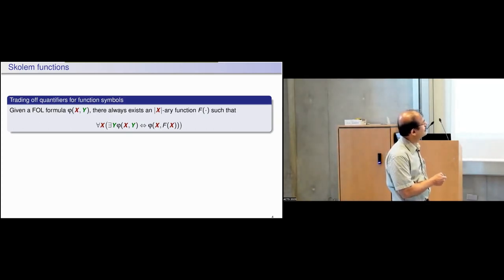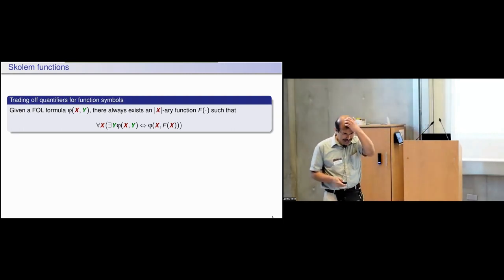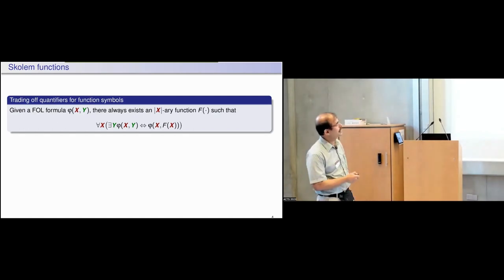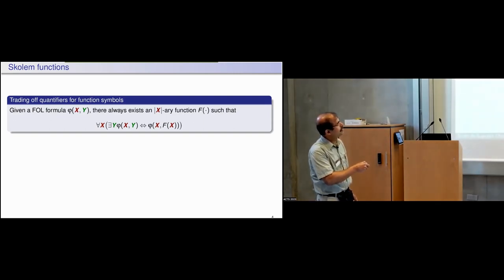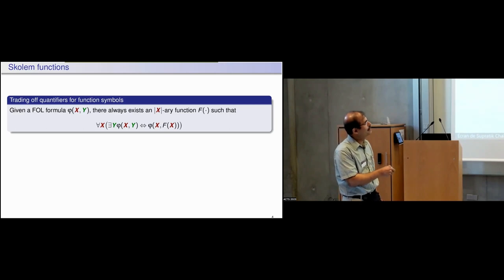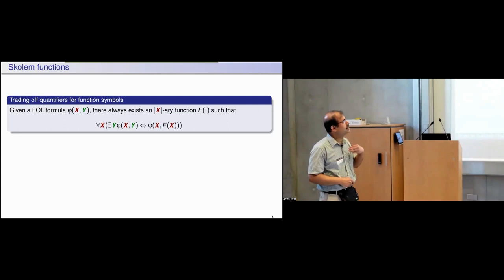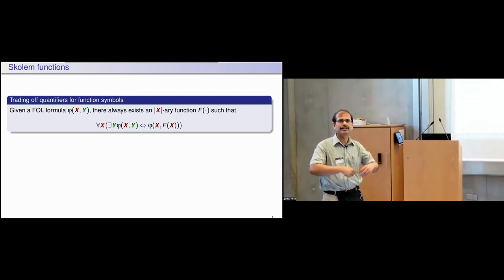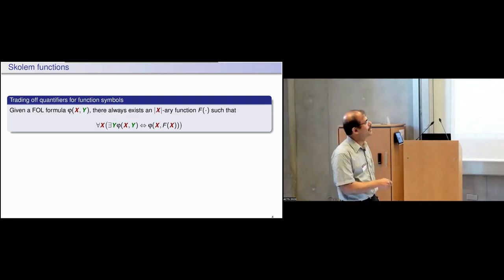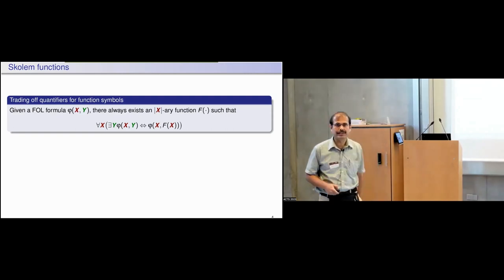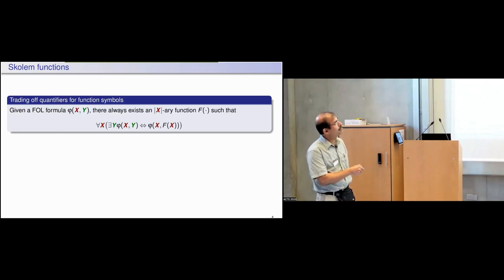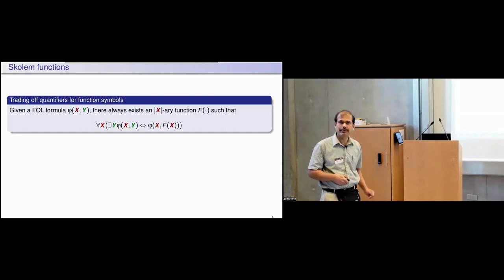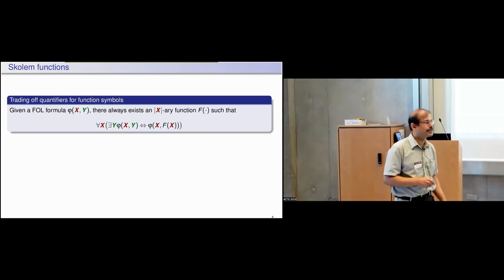So we are not requiring that for every x there be a y satisfying phi(x,y). For whichever x there is a y making phi(x,y) true, f(x) should give a good value. For the other x's for which there is no y, we do not care what f(x) gives — every f(x) is the same as any other.